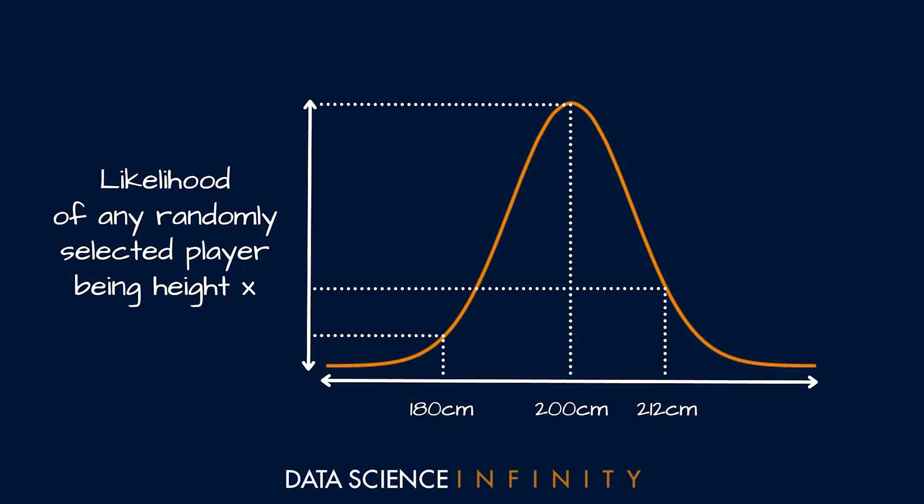Of course, the population of NBA players is much taller on average than the total population, but the principle remains the same. And this idea that we can essentially plug in height values and get a likelihood for that value from the sample or population in return is often referred to as the probability density function. And in more real terms, this is what defines the shape of our distribution.